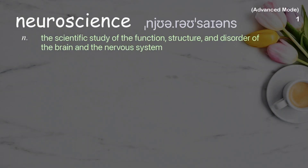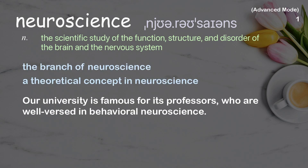Neuroscience: the scientific study of the function, structure, and disorder of the brain and the nervous system. Examples: the branch of neuroscience, a theoretical concept in neuroscience. Our university is famous for its professors who are well-versed in behavioral neuroscience.